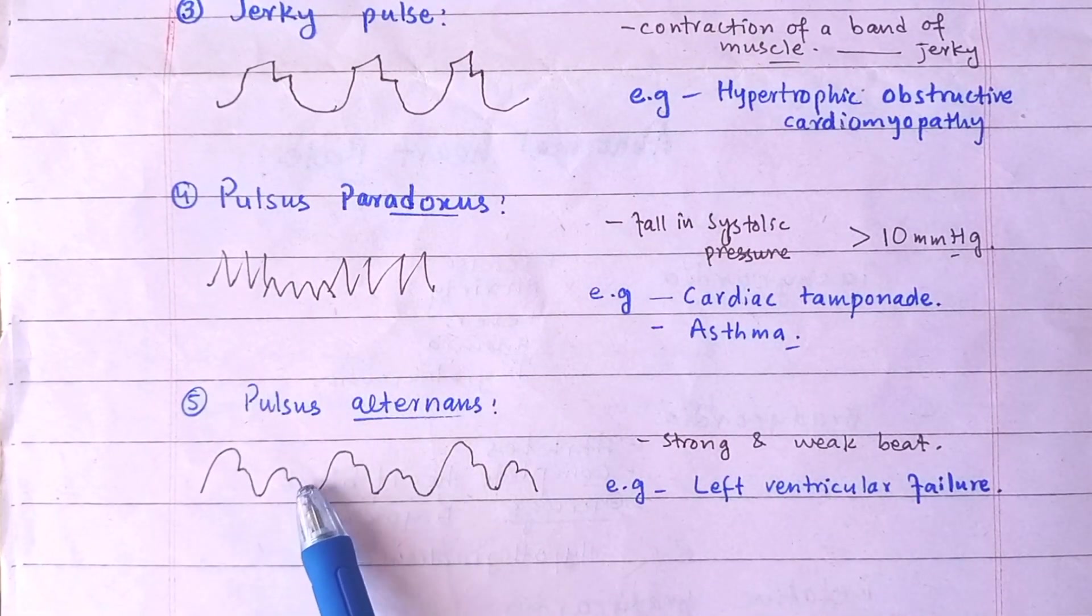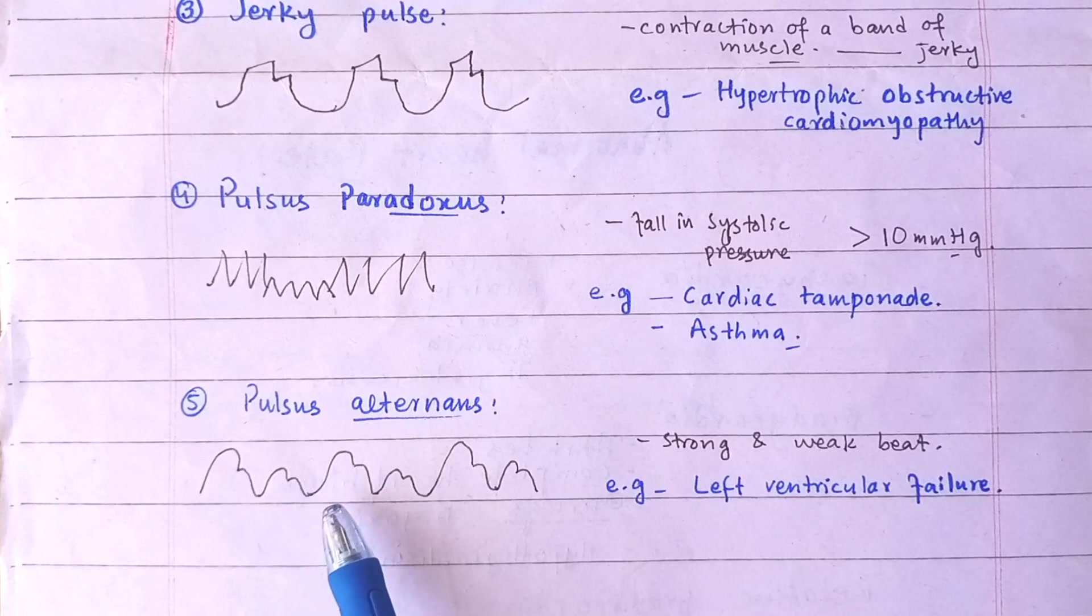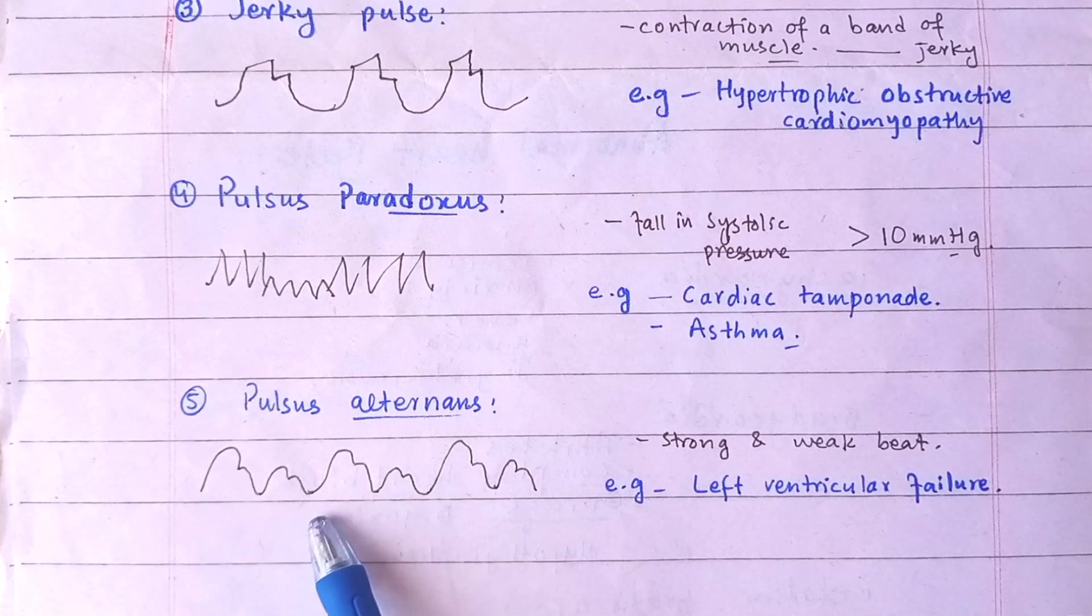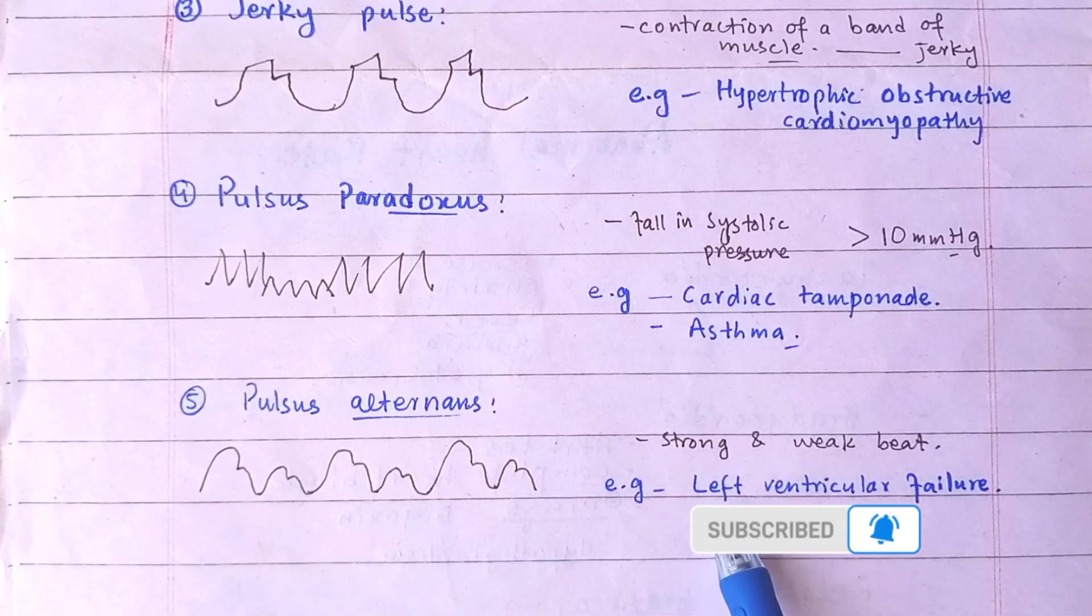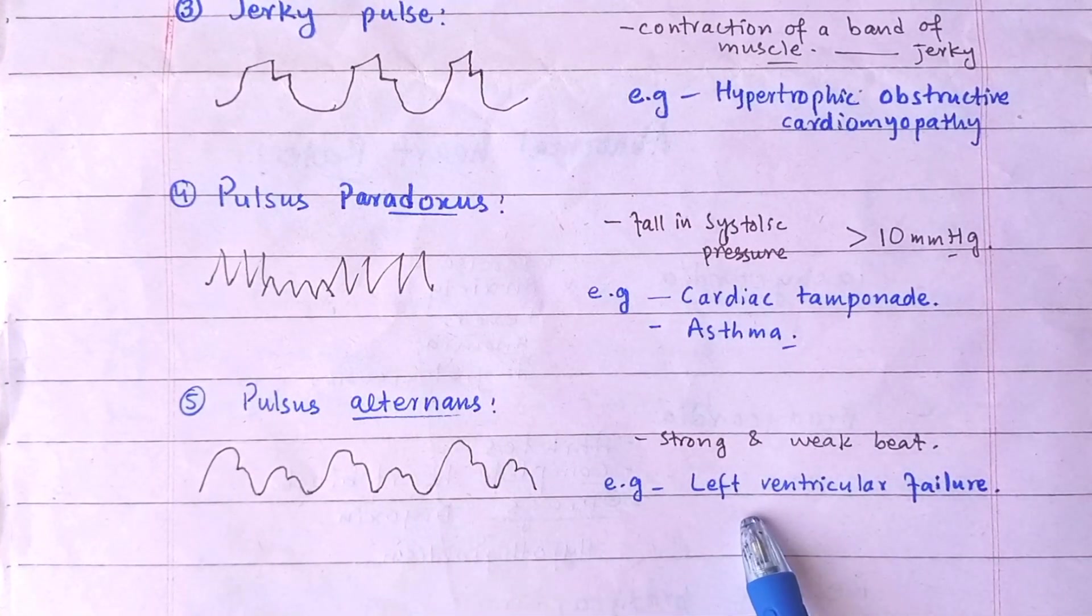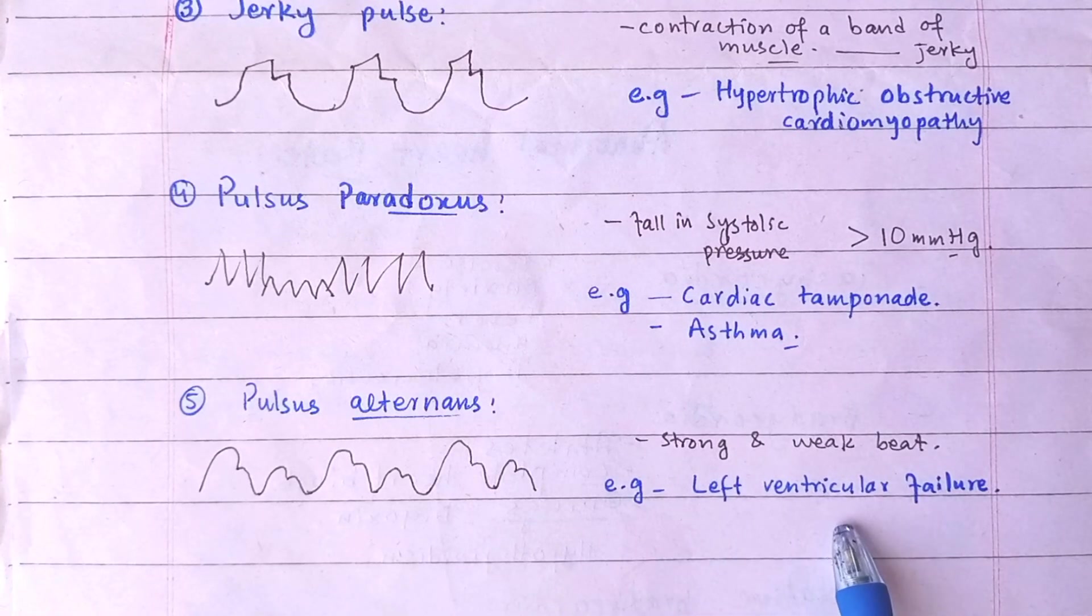Next one is Pulsus Alternans. A strong beat alternates with a weak beat, but the interval between these beats is constant and rhythm is regular. It is seen in left ventricular failure and supraventricular tachycardia.